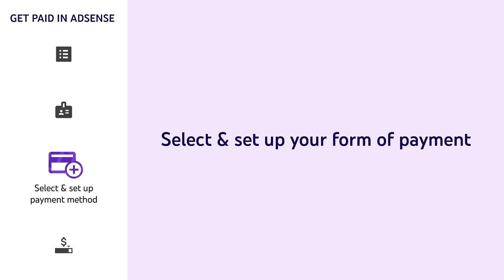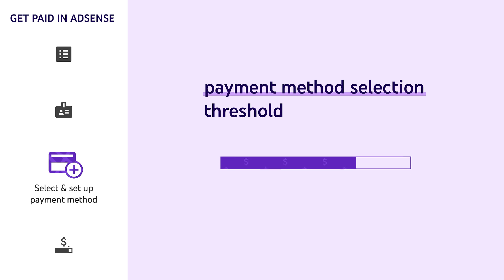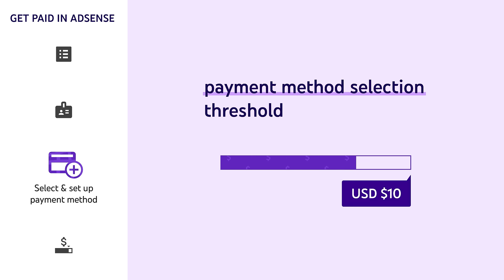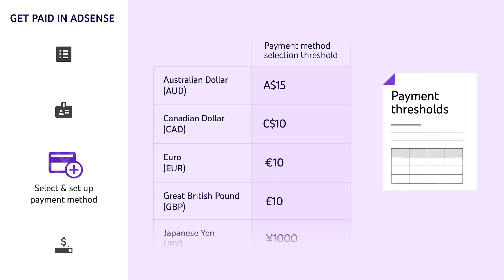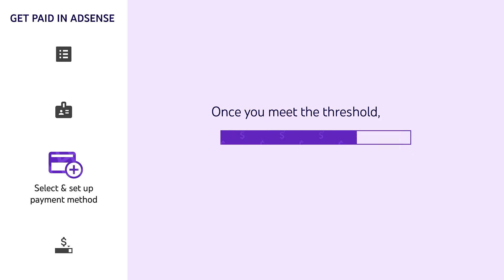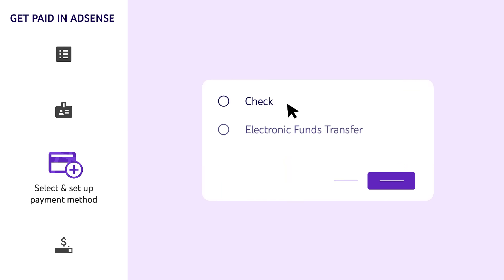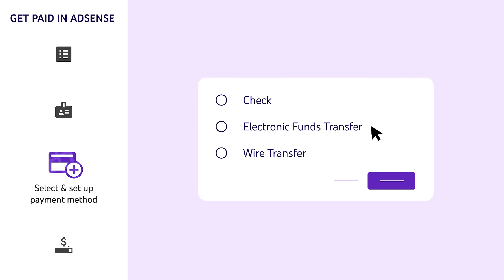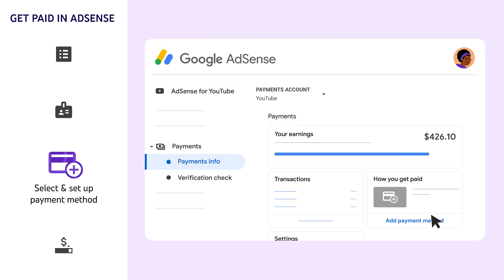Next, you'll need to select and set up your form of payment. To do this, you'll first need to meet the payment method selection threshold. This is 10 US dollars for people in the US, but the amounts vary depending on your location and currency. To see what your payment method's selection threshold is, check out the Help Center article called Payment Thresholds linked in the description. Once you meet the threshold, you can select your form of payment. Depending on your payment address, you can choose between options like a check, electronic funds transfer, or a wire transfer. To set up your form of payment, go to AdSense, then Payments, and click Add Payment Method.